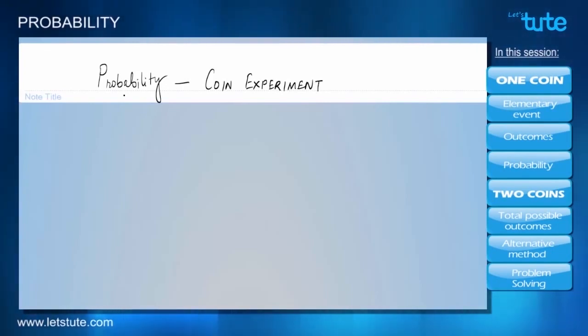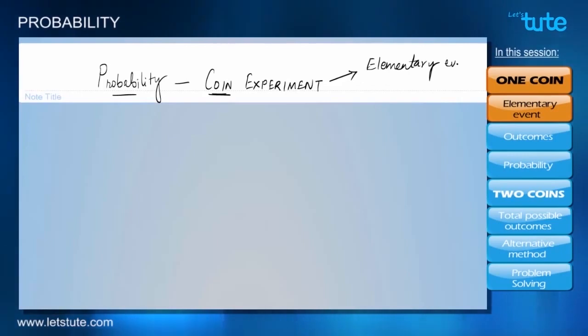If in case we have missed out on those concepts, you can go back and see our video based on probability. Now, coin experiment involves the use of coin and it is an elementary event. But why we call it an elementary event? Let's see.